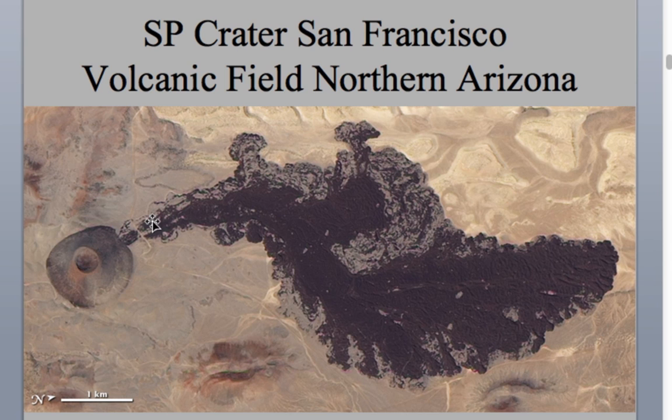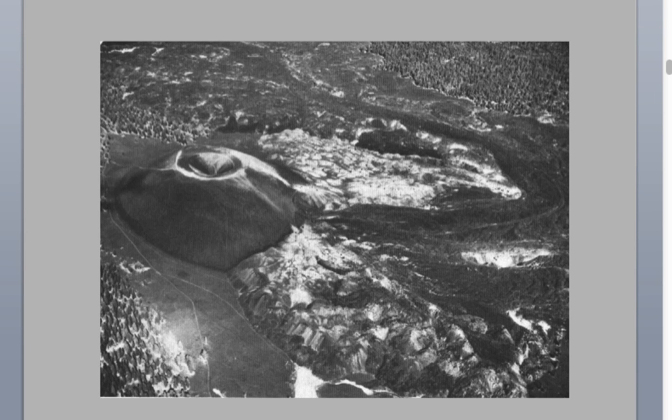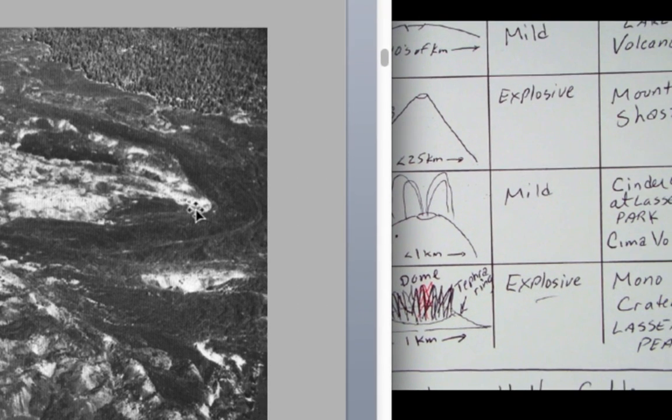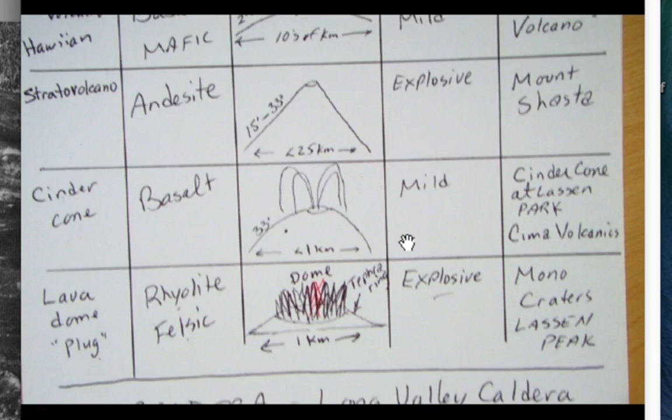Here in California we have our cinder cone at Lassen and the same example here. The tephra exploded out of here and then out of the flank vent we see the bulk of it where the lava has come out. In fact I want to illustrate that over here on this next part down here.